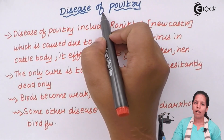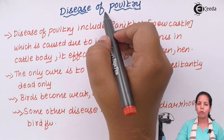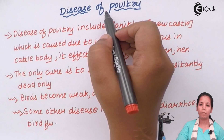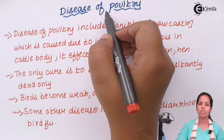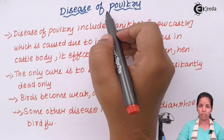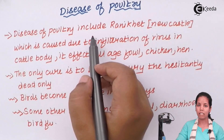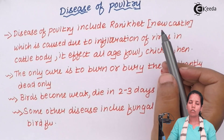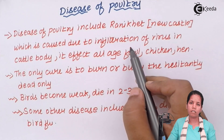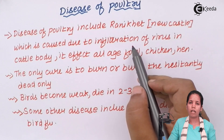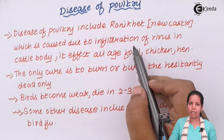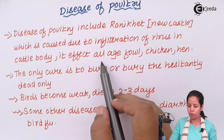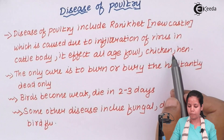Poultry animals are reared to obtain meat, chicken, or eggs from them. However, during the rearing process there are chances that food or water given to these animals becomes contaminated. The most important disease of poultry is Ranikhet, or simply called Newcastle disease. It is caused when viruses enter inside the poultry — infiltration of viruses. These viruses are present in the atmospheric air or are infective mosaic viruses, and they can affect fowls, chickens, or hens of any age.